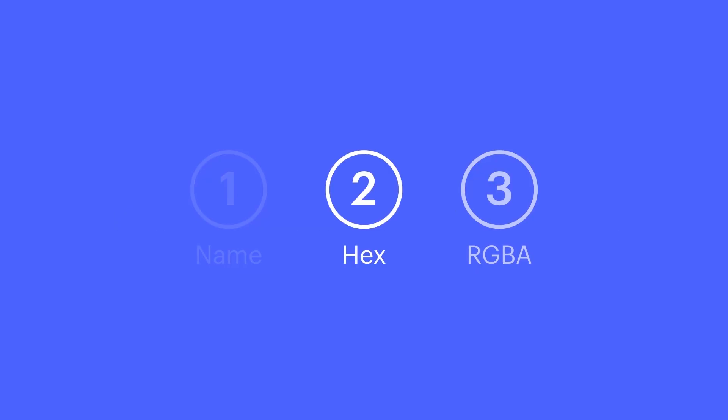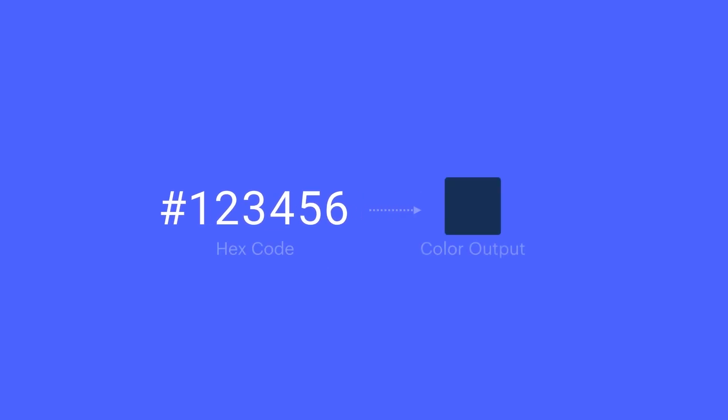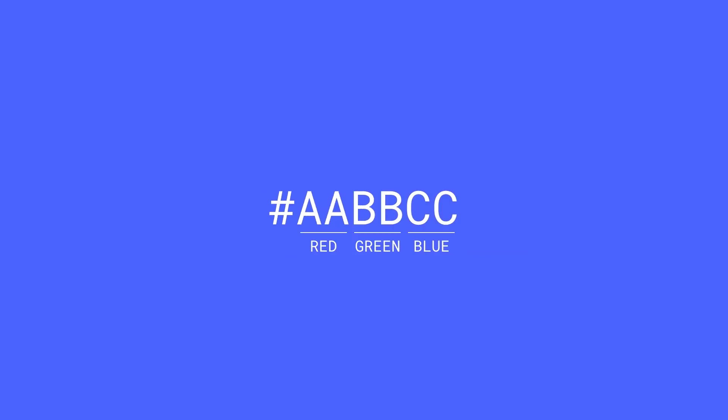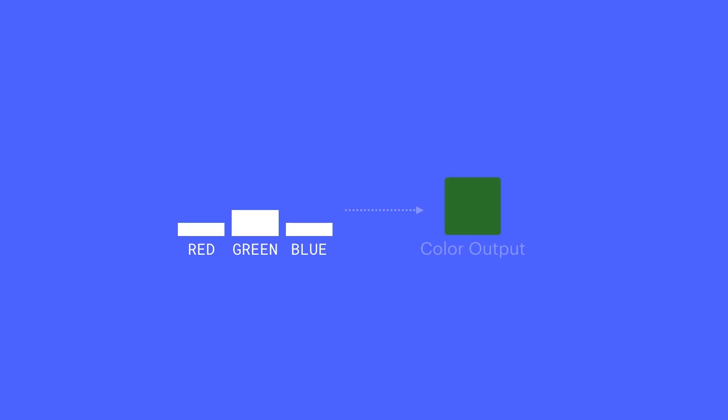We have hex codes. These are usually six-digit codes that correspond with a precise color output. The reason they're also called hex triplets is because there are three sets of two digits — red, green, and blue — the same three colors that make up each pixel in a display. As you increase the value of a particular color, the more of that color you get in your output.